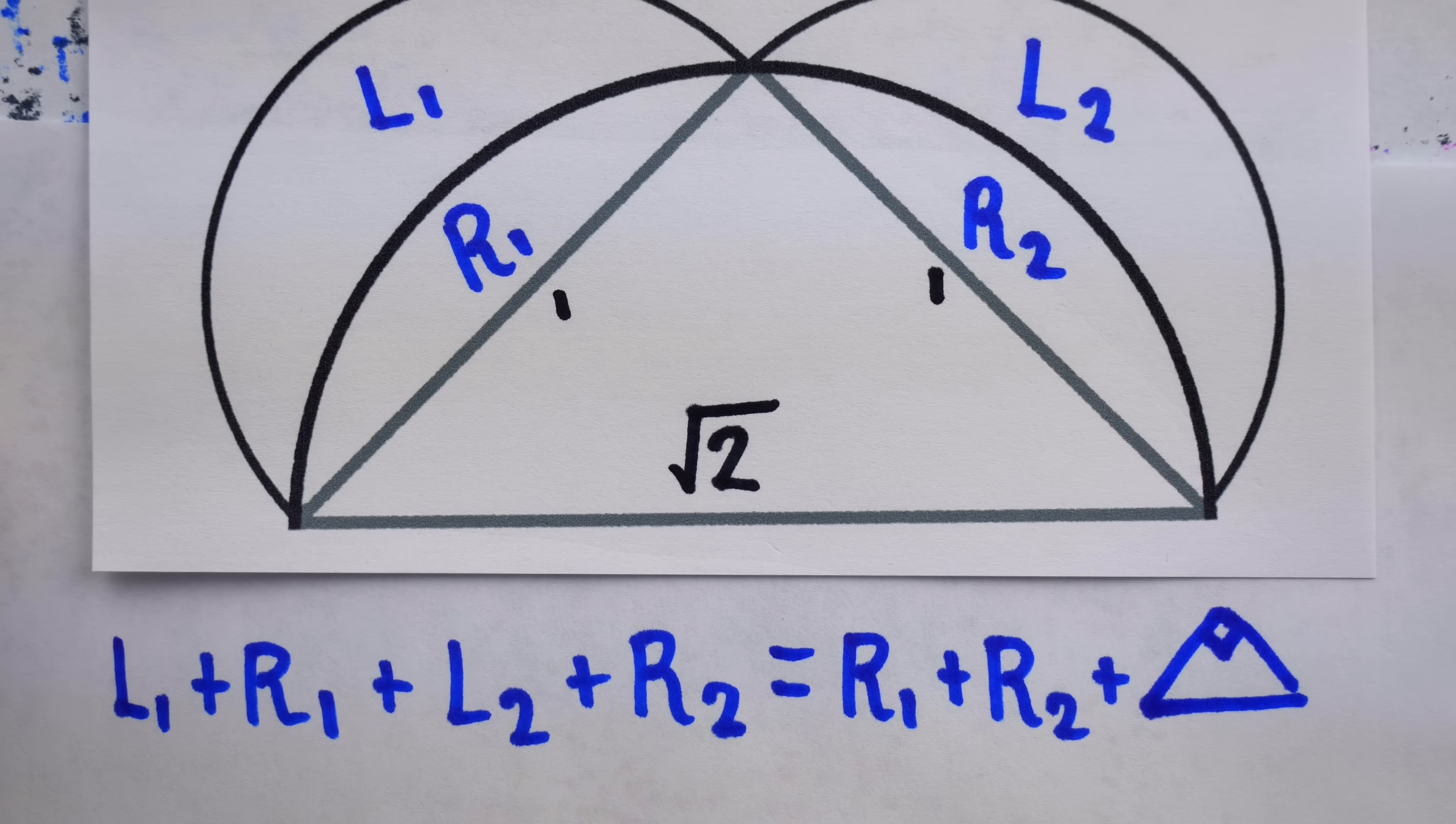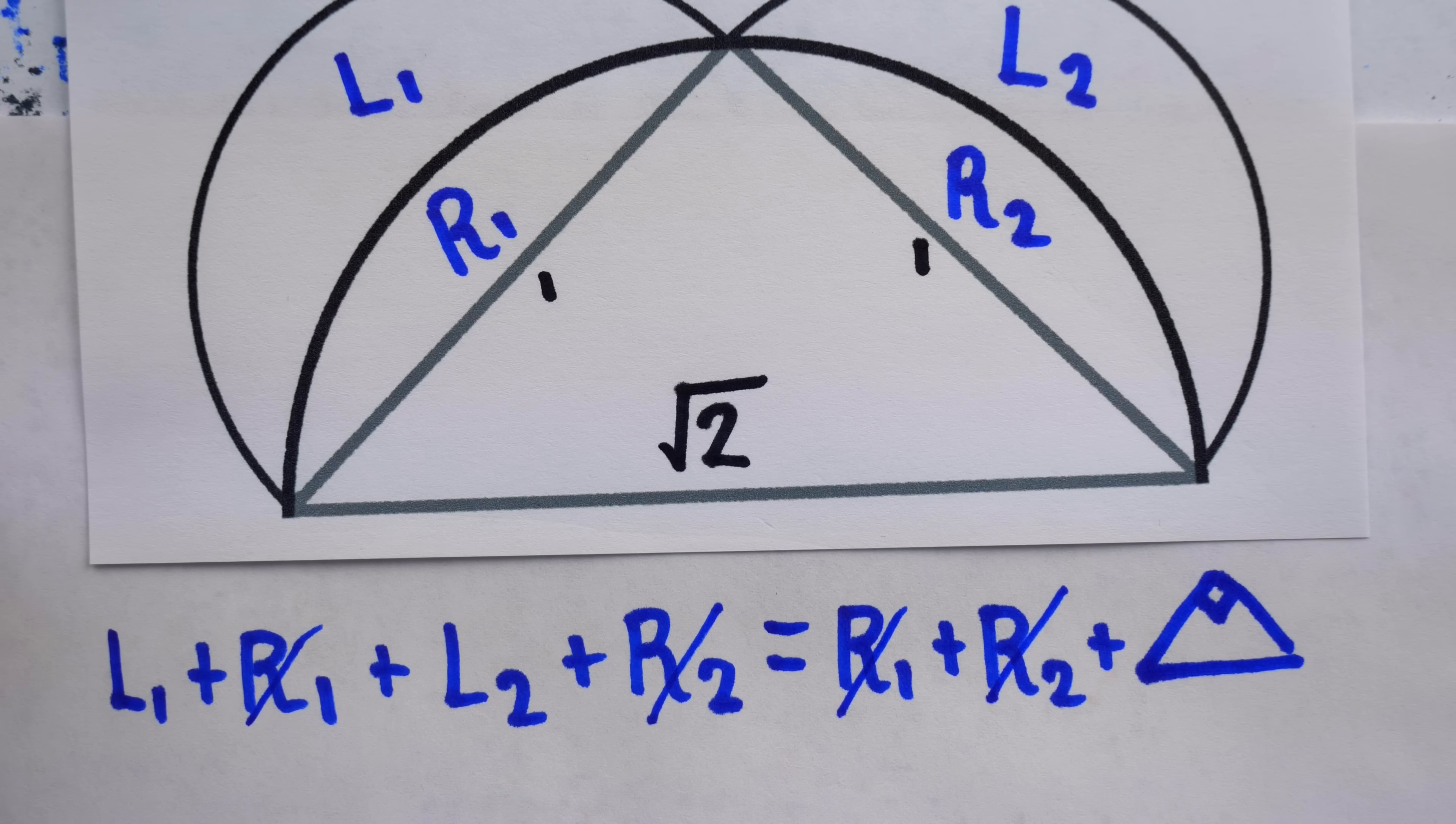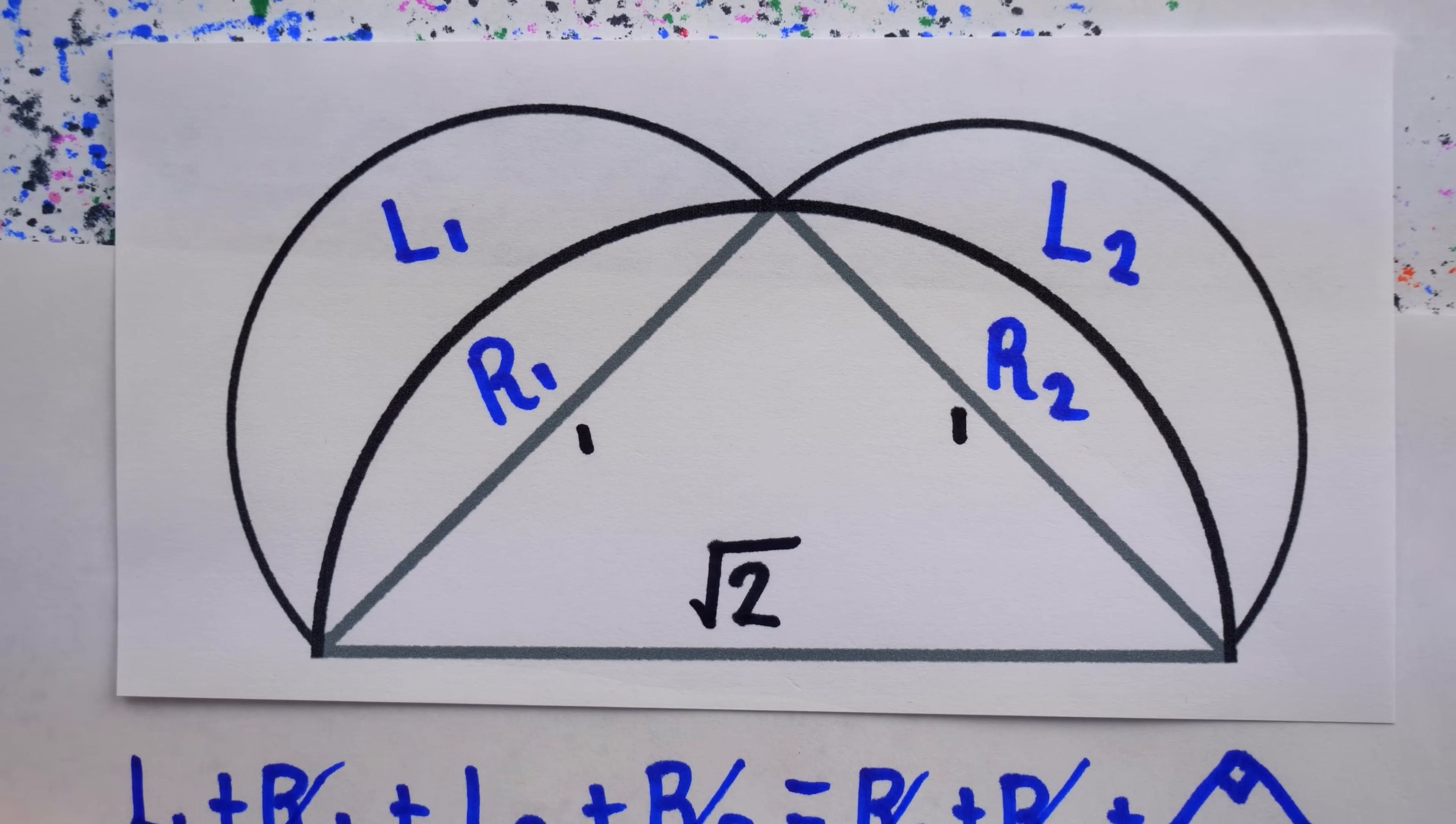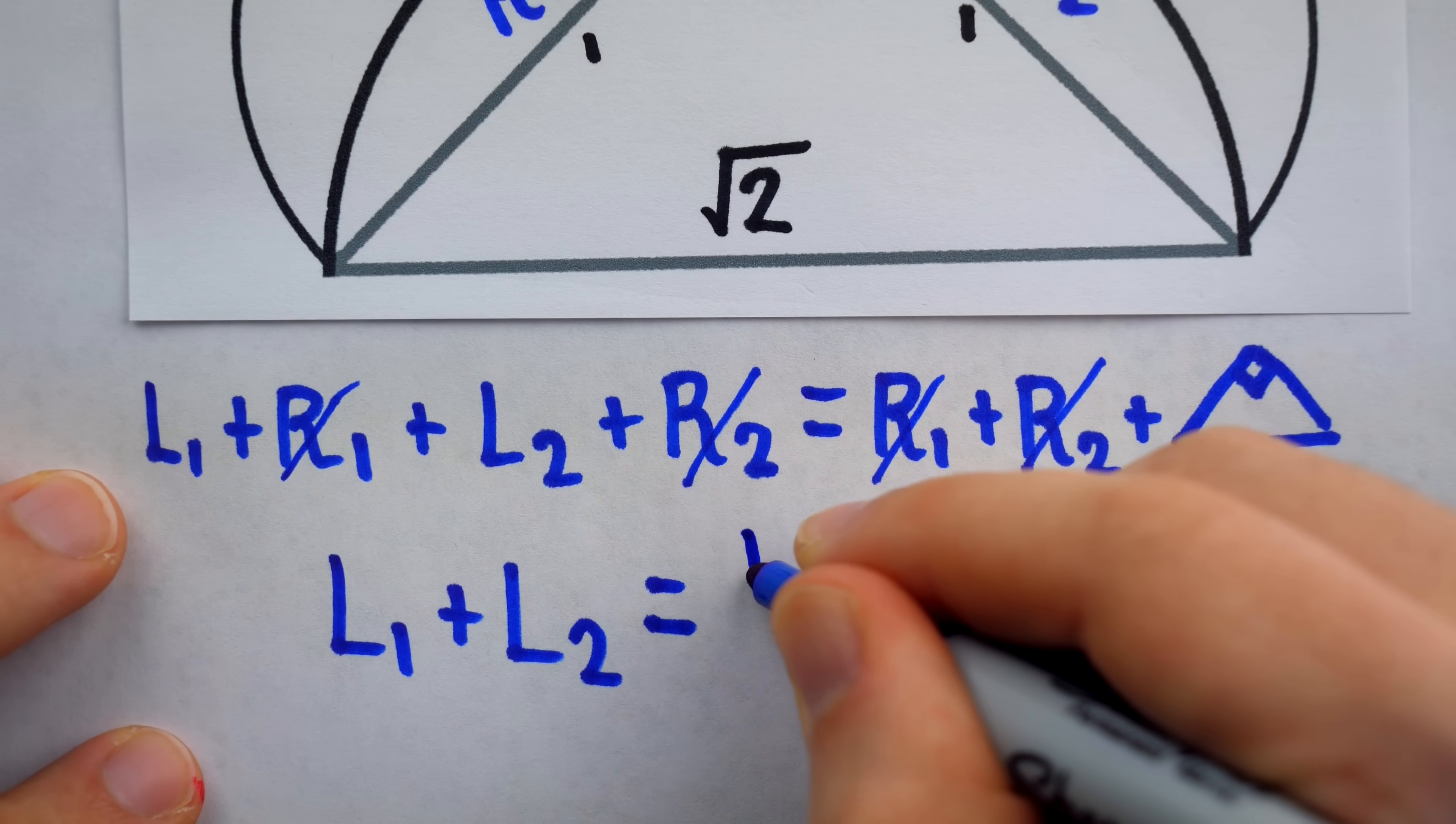Now, hopefully you can see exactly where this is going. From the two smaller semicircles, we can remove the region R1 and the region R2. If we remove the same regions R1 and R2 from the big semicircle, then the remaining areas must still be equal. Namely, the combined areas of the first lune and the second lune must equal the area of that isosceles right triangle. The area of a triangle was also known in Hippocrates' time, so adding these two lunes together will produce an area of one half base times height. The base is one, the height is one, so in this case it would just be one half.